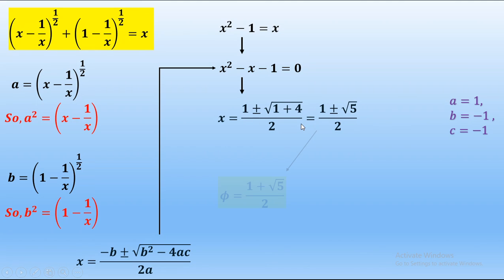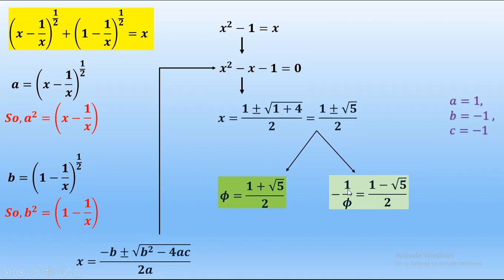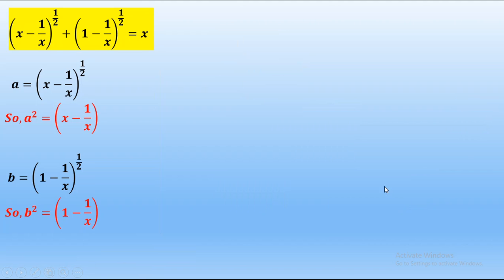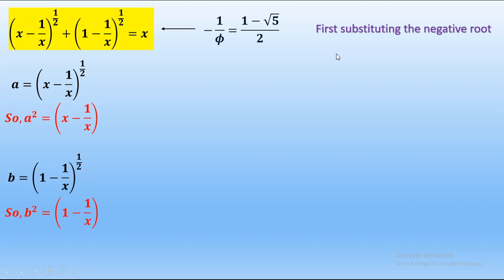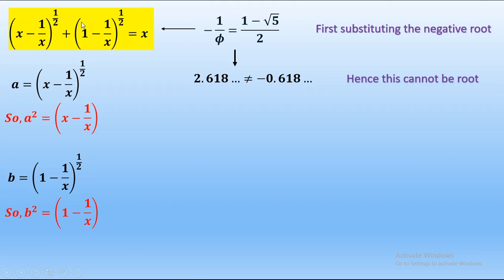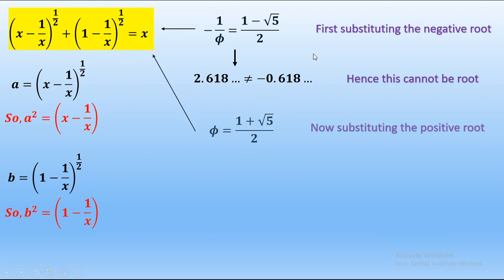From this we obtain two roots. The first root is (1 + √5)/2, which is phi, the golden ratio. The second root is (1 − √5)/2, which is the negative reciprocal of phi. Taking the negative root and trying to substitute: a sum of two square root terms can never give a negative number, and since substituting this negative root yields a negative x, it is absurd. In numerical terms, 2.618 is not equal to −0.618. Hence this negative root cannot be valid. So we consider the positive root, (1 + √5)/2, which satisfies the given expression.